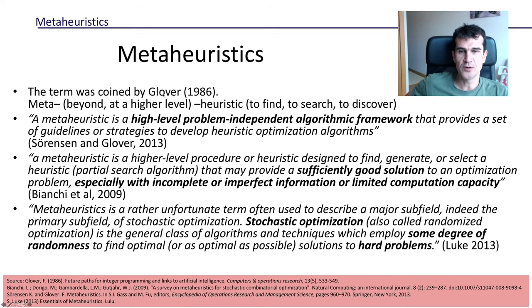Particularly interesting points in each of these definitions—as we've seen, it's a high-level, problem-independent algorithm, and also the solution usually provides sufficiently good solutions. They do not guarantee to reach the optimum, but they will give you a good enough solution. They're usually useful when you deal with incomplete or imperfect information or limited computational capacity. The last definition by Luke says that metaheuristic is a rather unfortunate term, basically because it encompasses a huge family of different methods.